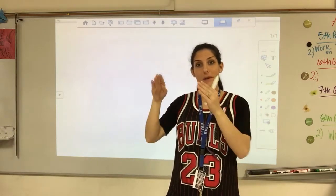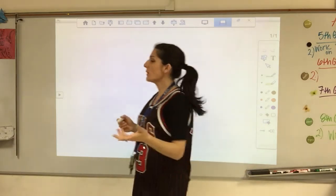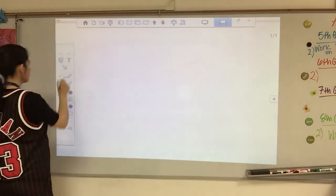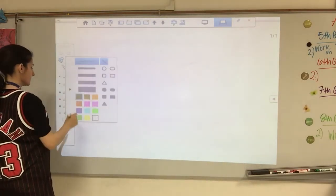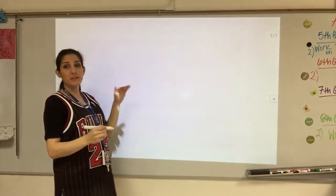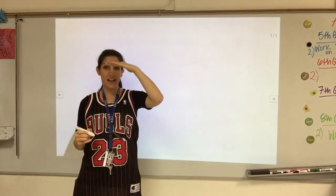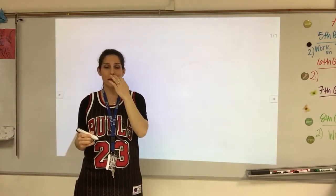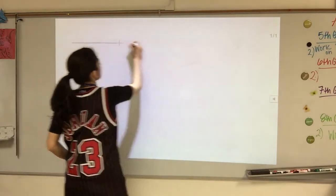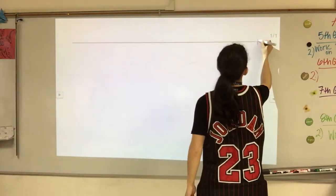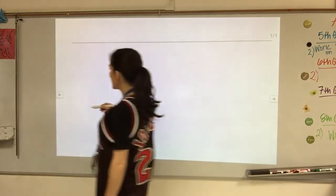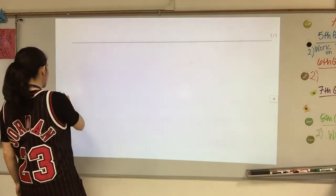I'm also going to do a worm's-eye view for a castle, where it looks bigger on the bottom. The first thing you always want to start with in perspective is a horizon line. Since I'm doing bird's-eye view — think of the horizon line as your eye line — I'm going to place the horizon line up near the top of the page.